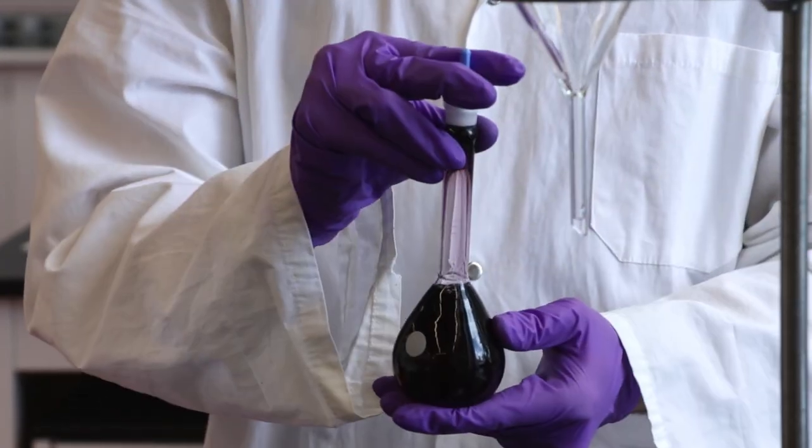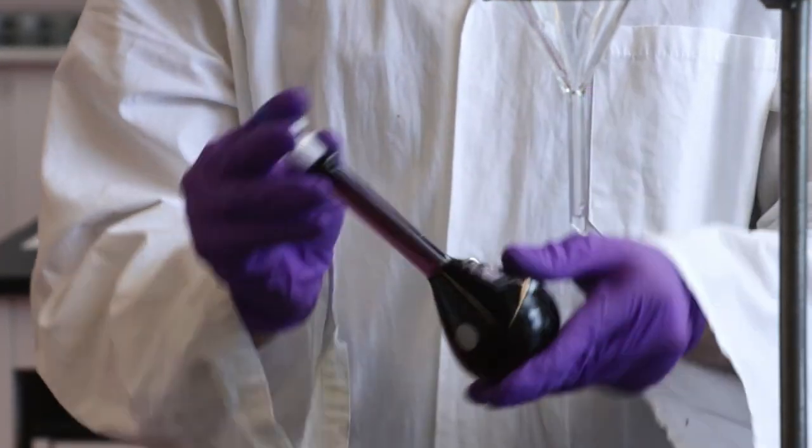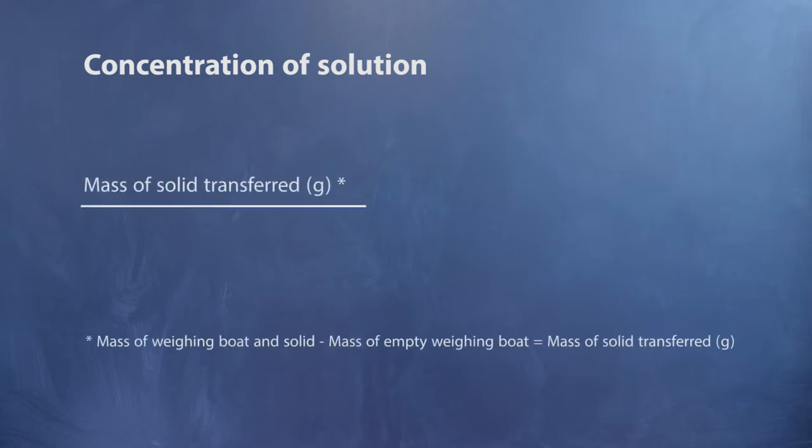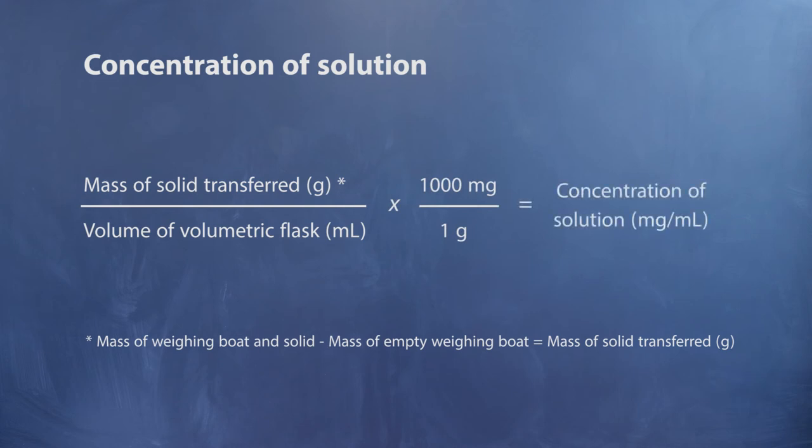To calculate the concentration of the solution you just made, divide the mass of the solid transferred to the volumetric flask by the volume of the solution, which in this case is 250 milliliters. Because the mass was measured in units of grams, we need to convert it to milligrams by multiplying it by 1000. This will give you the concentration of milligrams over milliliters.